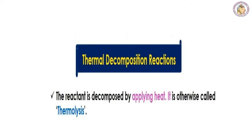In thermal decomposition, the reactant is decomposed by applying heat. For example, on heating mercury(II) oxide, it decomposes into mercury metal and oxygen gas: 2HgO → 2Hg + O2. This is called thermolysis. Another example is CaCO3 → CaO + CO2. In thermal decomposition reactions, heat is supplied to break the bonds — such reactions that absorb heat are called endothermic reactions. In combination reactions we saw they are exothermic; in decomposition reactions they are endothermic.